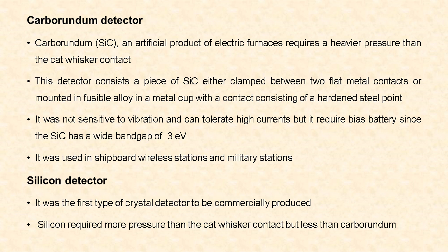The carborundum detector was not as sensitive to vibration as the cat whisker detector, and it can tolerate high currents. However, it requires a bias battery because the band gap energy of silicon carbide is 3 electron volts, which is much wider, and hence it requires biasing.